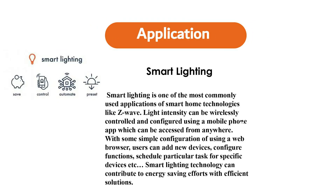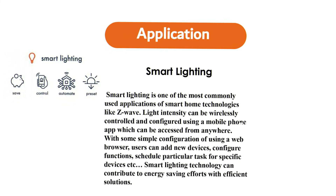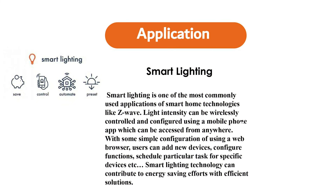Smart Lighting. Smart Lighting is one of the most commonly used applications of smart home technologies like Z-Wave. Light intensity can be wirelessly controlled and configured using a mobile phone app which can be accessed from anywhere. With some simple configuration using a web browser, users can add new devices, configure functions, schedule particular tasks for specific devices, etc. Smart Lighting technology can contribute to energy saving efforts with efficient solutions.